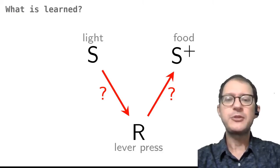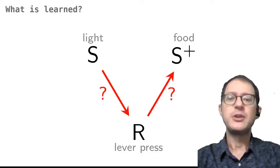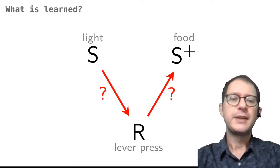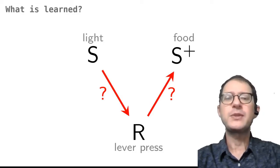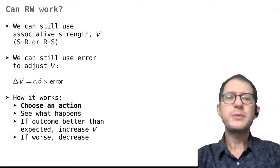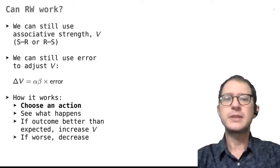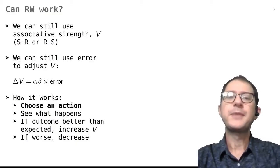We are not taking a position about what is learned exactly in instrumental conditioning. You can find that discussion in the lesson Do animals imagine the future? In this lesson, we are happy to say there is some kind of associative strength that changes during instrumental conditioning, and this change is what we want to understand. This is helpful, because we already have a nice model of how associative strength may change, and this is the Rescorla-Wagner model. It turns out that we can still use it for instrumental conditioning.